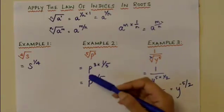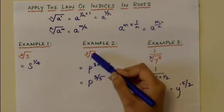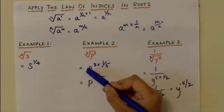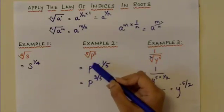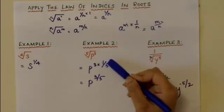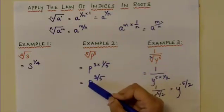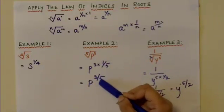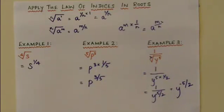In the next example you have fifth root of p cubed, so it is p to the power of 3 times 1 over 5, since the fifth root is 1 over 5. Therefore, it is p to the power of 3 over 5, which is 3 times 1 over 5.